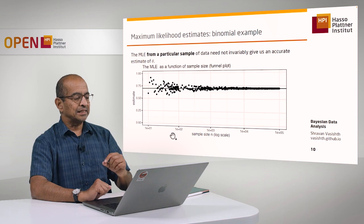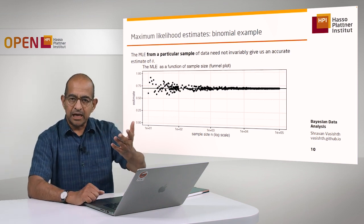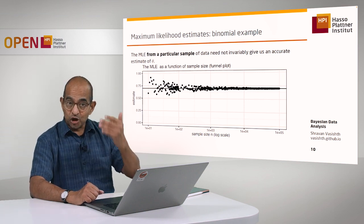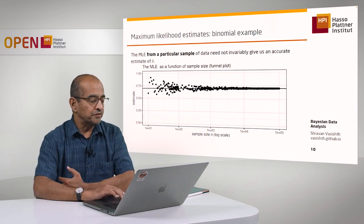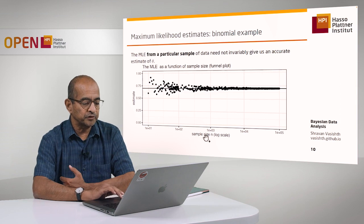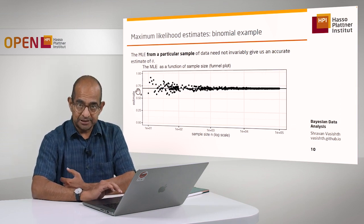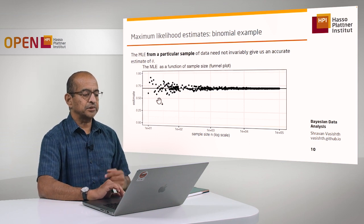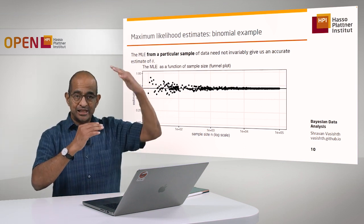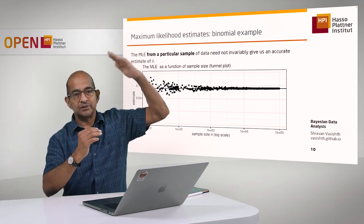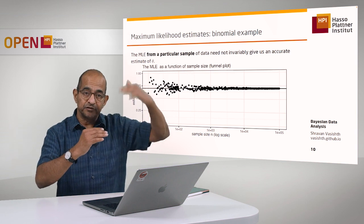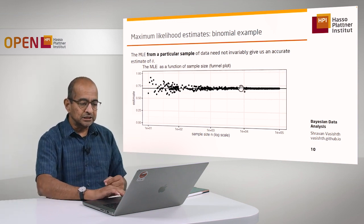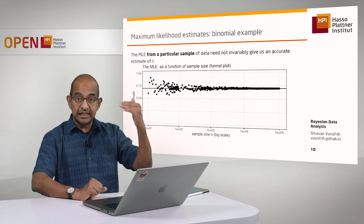One important thing to understand is that in a particular experiment — say you run a trial with sample size 10 and get seven successes — you get 7 out of 10 as your estimate of theta. It is a maximum likelihood estimate, but it's not necessarily the true value of that parameter. For small sample sizes, the MLE is going to fluctuate around the true value — it's going to bounce around. Statisticians call this a vibration effect. It's only when you get to larger sample sizes that you consistently start getting MLEs that represent the true value.